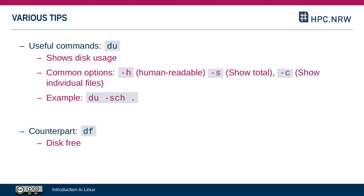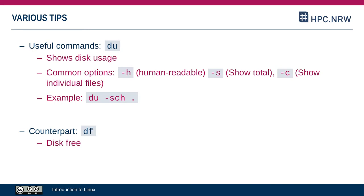du has a couple of options that you very commonly see. The -h option will make the file sizes human-readable, meaning that instead of a long number of bytes, you get something like 5g if it's 5 gigabytes. The -s option will show you the total, or in other words, the sum of everything else in the list. And the -c option will show you individual files. You can simply combine these options into one — the order doesn't matter — and it is equivalent to specifying these 3 options separately.